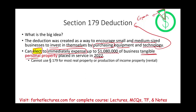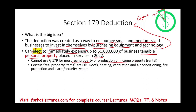You cannot use Section 179 for real property or production-of-income property, which is rental property. However, certain rental property items are okay. Although the building itself is not eligible, roofs, heating, ventilation, air conditioning, fire protection, and alarm systems are considered separate from the real property — they're treated as personal property for the purpose of Section 179. But the building itself is not eligible.